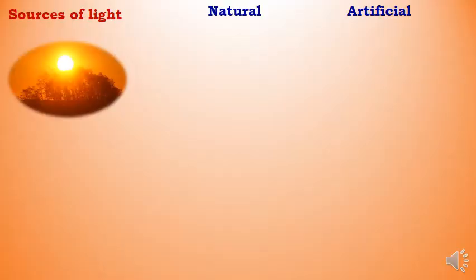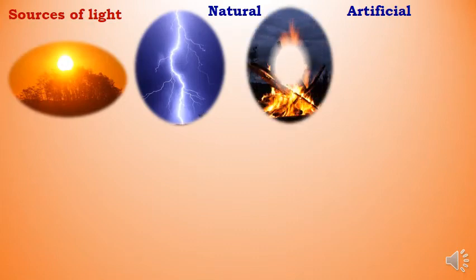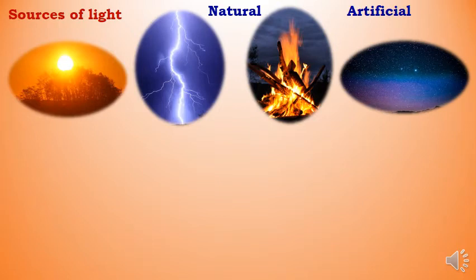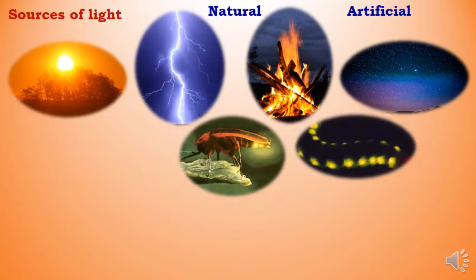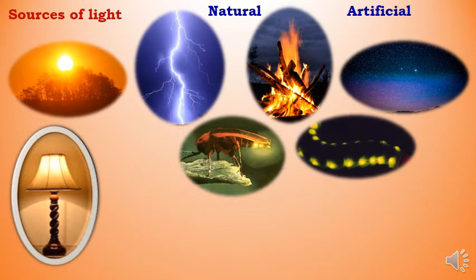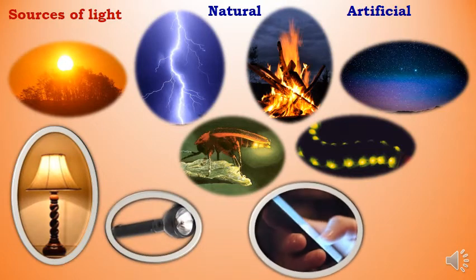Can you tell me different sources of light? One is natural and another is artificial. Natural sources include the sun, lightning, fire, the night sky, and bioluminescent insects. Artificial sources include a night lamp, torch, and light coming from your mobile screen.